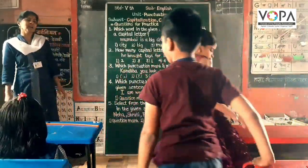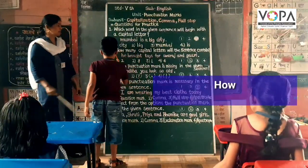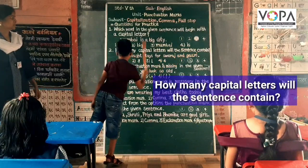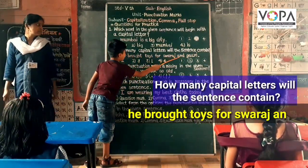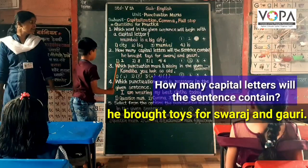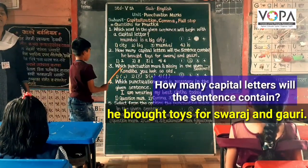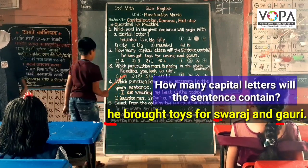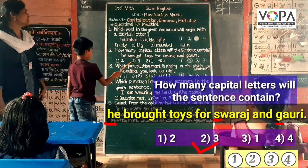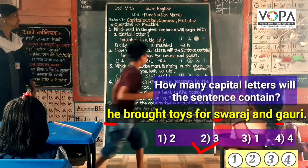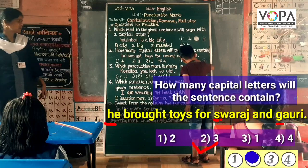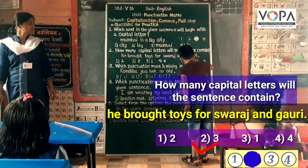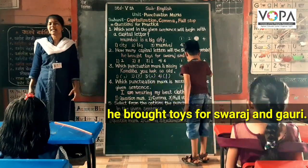Now Swaraj, come here. Read the second question: How many capital letters will the sentence contain? He brought toys for Swaraj and Gauri. One, two, three. What is the number of this answer? Second. Very nice. Now we color the second option. Very nice, Swaraj. Clap for Swaraj.